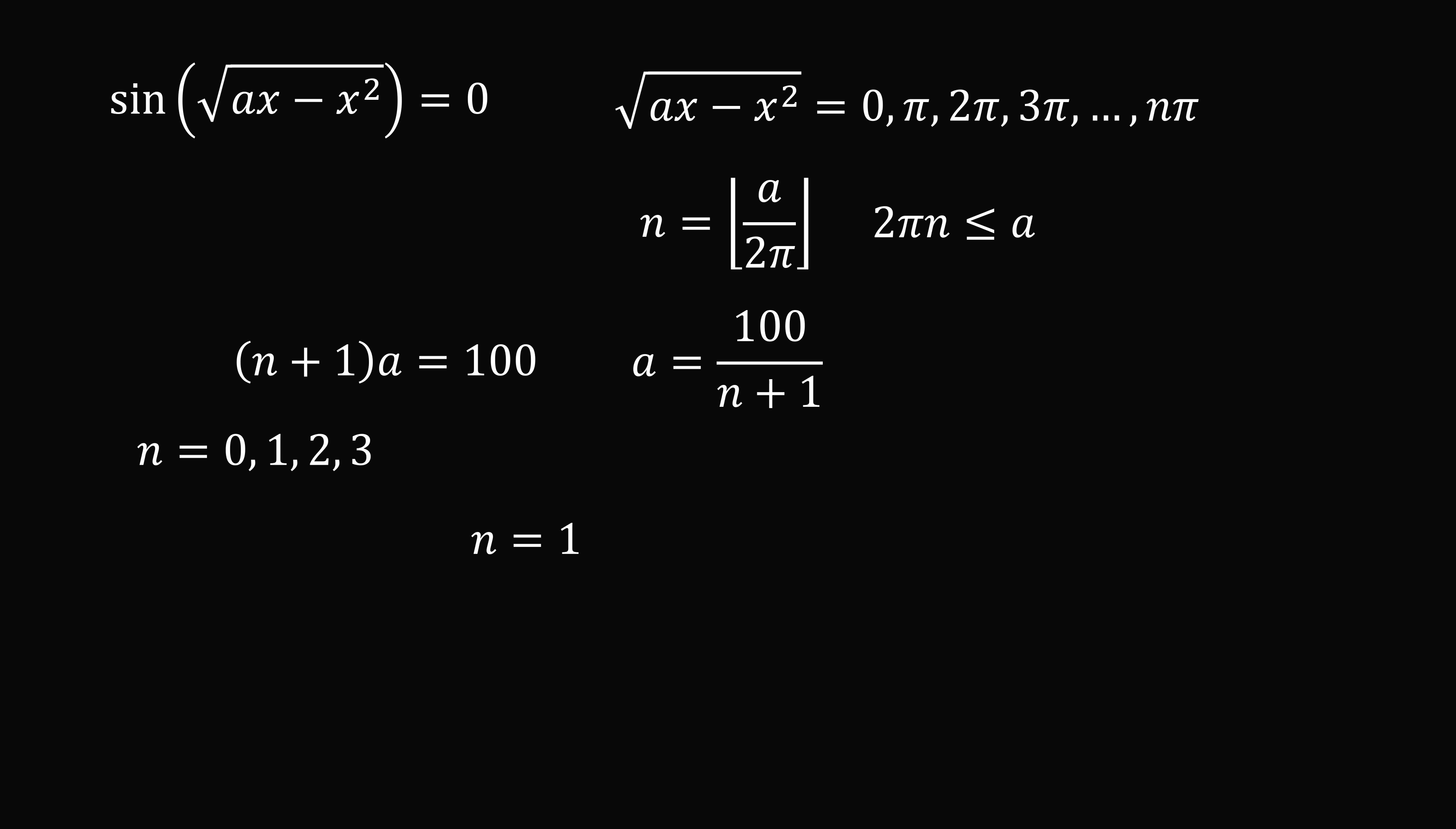Let's substitute n is equal to 1. We can then solve that a is equal to 50. But once again, n will not be equal to the floor of a divided by 2 pi. So this doesn't work. We substitute n is equal to 2. We get a is equal to 33 and 1 third. But then n will not be equal to the floor of a divided by 2 pi.